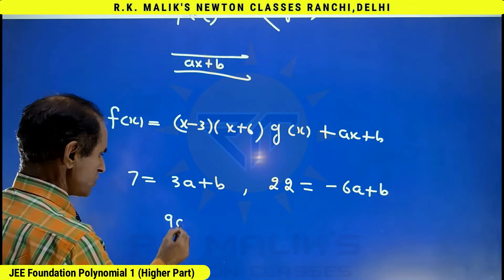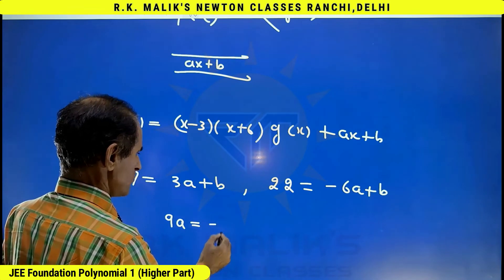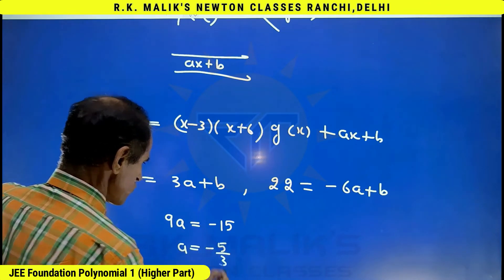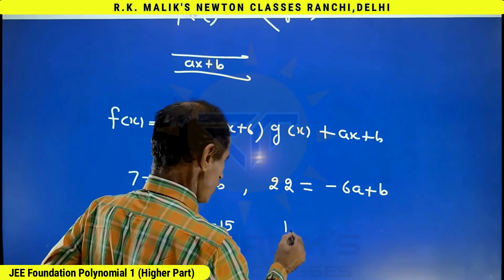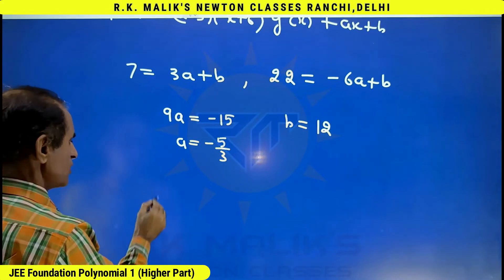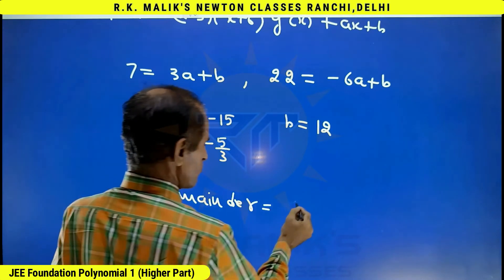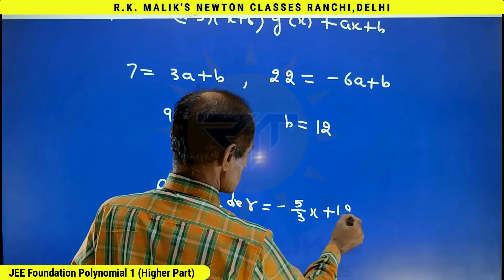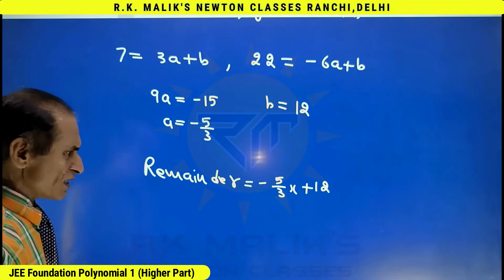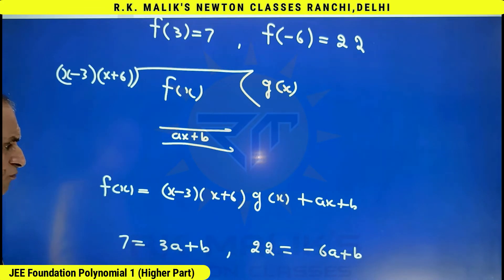Solving these two equations, we get 9a = -15, that is a = -5/3, and therefore the value of b becomes 12. Hence we can say the remainder is equal to (-5/3)x + 12. Agreed, it is correct and not a difficult way, but the smart way is better. The smart way will be even more advantageous when the question is in a slightly more extended form.